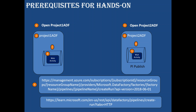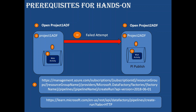To call the pipeline in Project 2 ADF, you need to follow this URL pattern: subscription ID, resource group name, data factory name, pipeline name, and API version — all taken from Project 2 ADF. Once you have those details, you use the web activity in Project 1 ADF to call that pipeline. However, if you call it now, it will fail because Project 1 ADF is not recognized in Project 2 ADF.